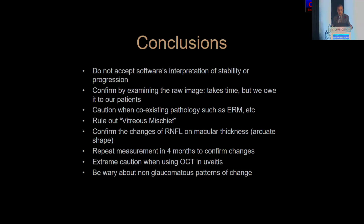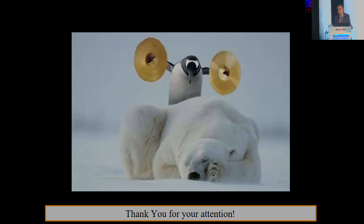In conclusion: don't accept the software's interpretation of stability or progression — confirm it. Examine the raw image; it takes time, but we owe it to our patients. Look at coexisting pathologies. Rule out vitreous mischief. Confirm changes of the nerve fiber layer on macular thickness. Repeat measurement if you're not sure. Exercise extreme caution if you are going to use OCT in uveitis. And be aware of non-glaucomatous patterns of change. Thank you very much for your kind attention.